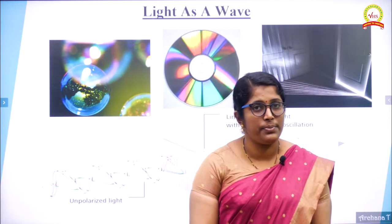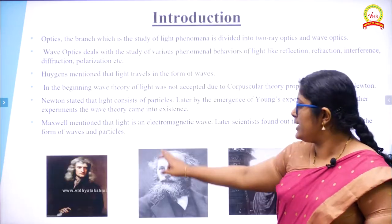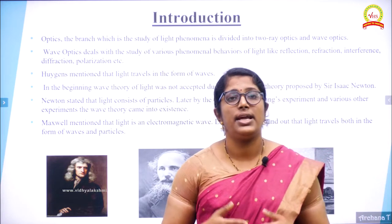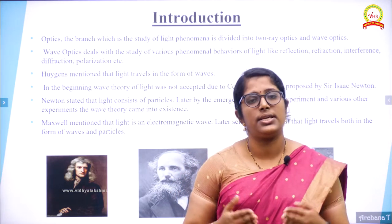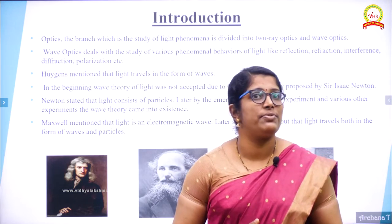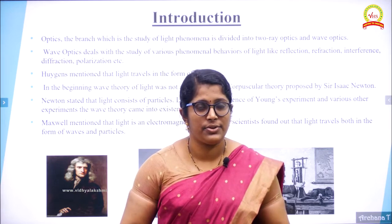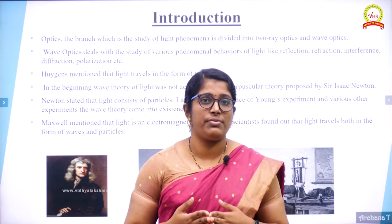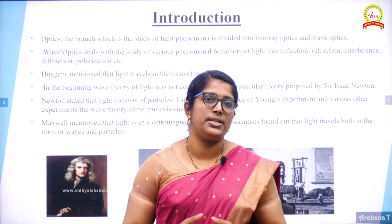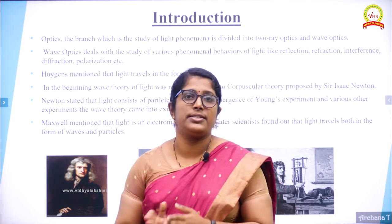The phenomena which could not be explained using ray optics can be well explained using the wave theory of light. Who put forward this wave theory? Christian Huygens — a great mathematician and Dutch physicist. He explained the wave theory of light, and the theory is named Huygens wave theory of light. He proposed that light has the property of a wave and propagates in the nature of a wave, and all the phenomena related to optics were also explained by Christian Huygens.